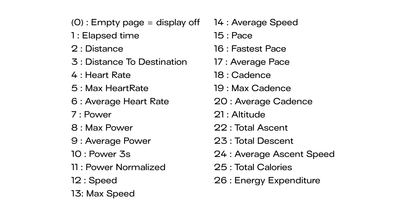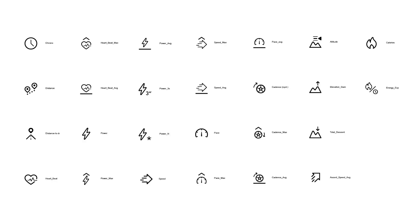Some of the data types available in Garmin devices include the following. Additional data types may become available when a compatible sensor or accessory is paired with your Garmin device.